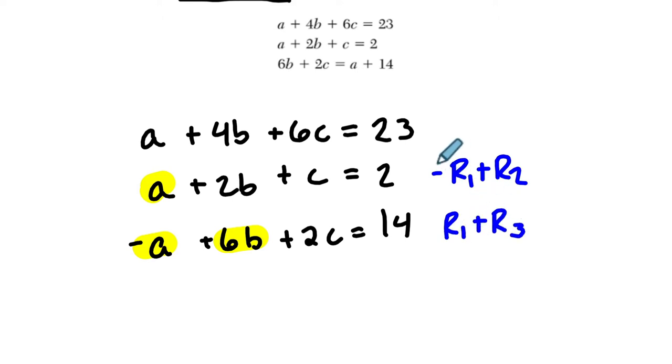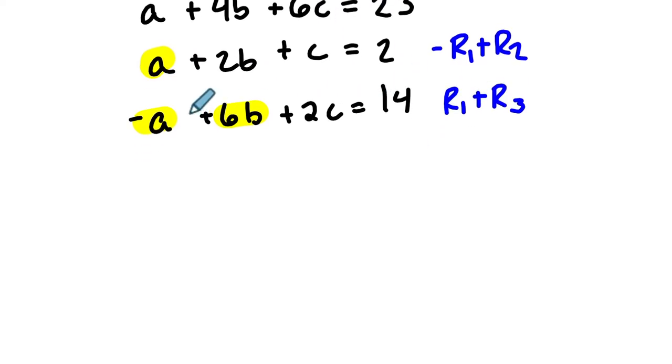So I'm writing that the opposite of the first row plus the second row, I'm going to add those two, get a new equation, put it in here, and it's still going to be part of the system. And then row 1 plus row 3, and put that here. So let's do that.